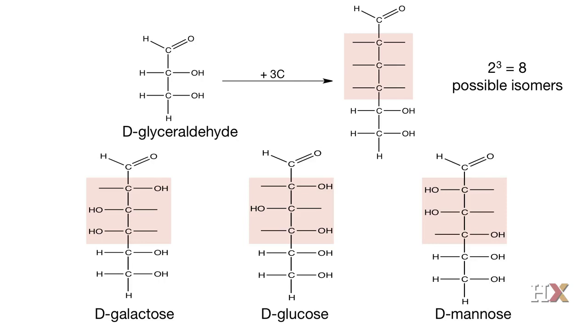In conclusion, we have seen in this video that monosaccharides can be described as linear structures. However, in the next video we'll learn that this is not always the case.